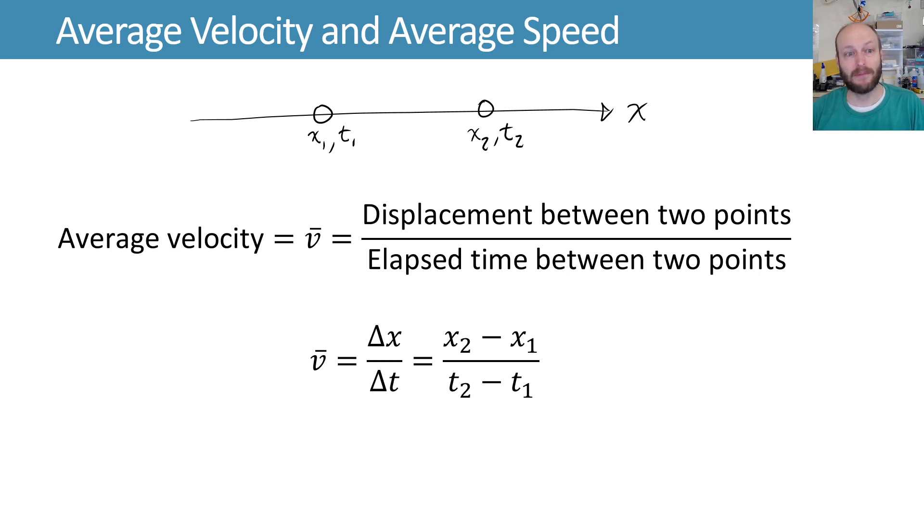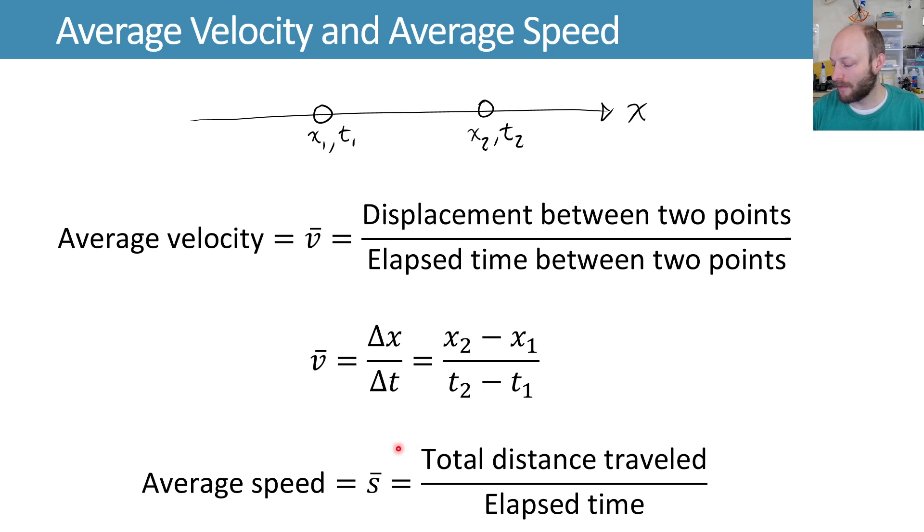Just like we had a vector quantity, and then we also just had a non-vector way of doing that with position, we have the same thing here with average speed. It's just talking about not displacement, but the total distance traveled divided by the elapsed time. So if I want to know my average speed over some time interval, I look at the total distance traveled, not the displacement, but just the total distance divided by the elapsed time.